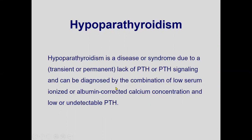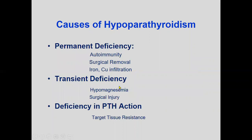There are many different causes that can lead to hypoparathyroidism. Permanent deficiency of PTH secreted by the parathyroid gland can be due to autoimmunity, surgical removal, or copper infiltration of the gland. Transient deficiency may be due to hypomagnesemia or surgical injury.